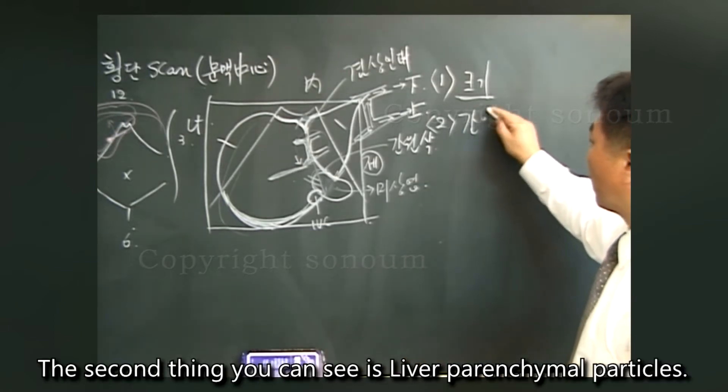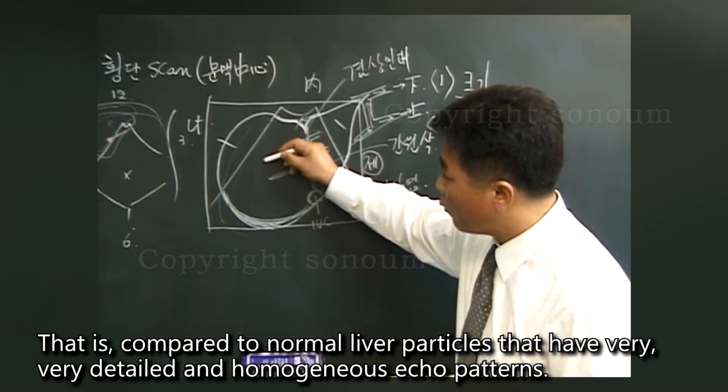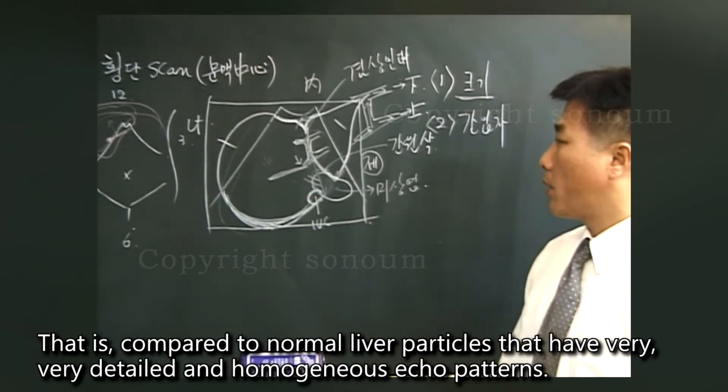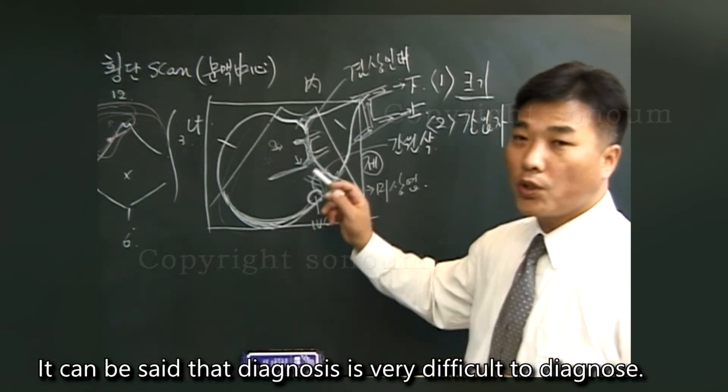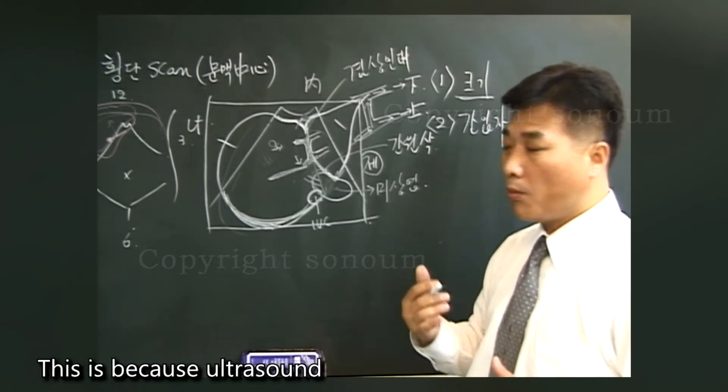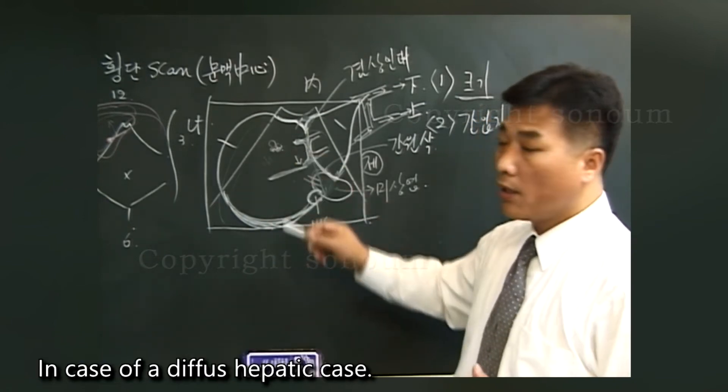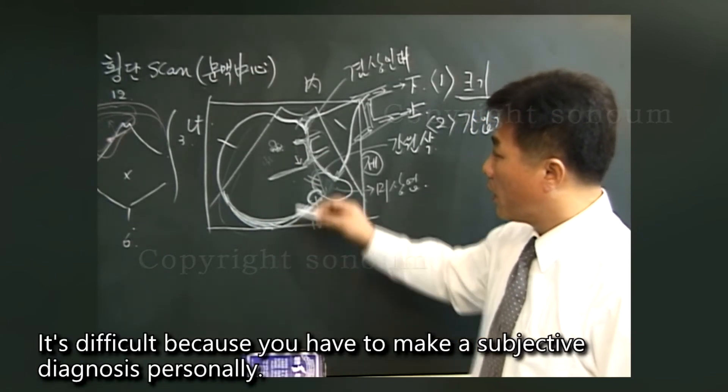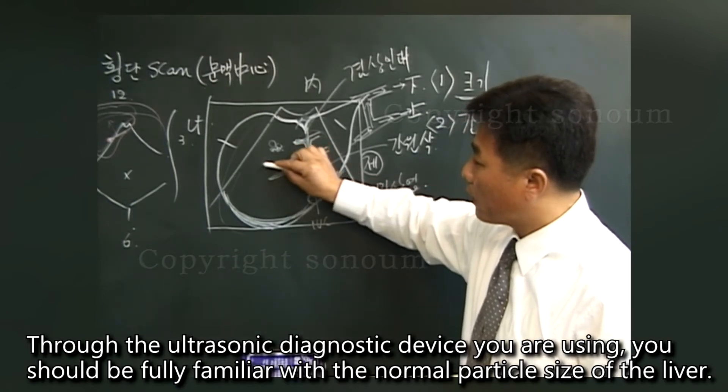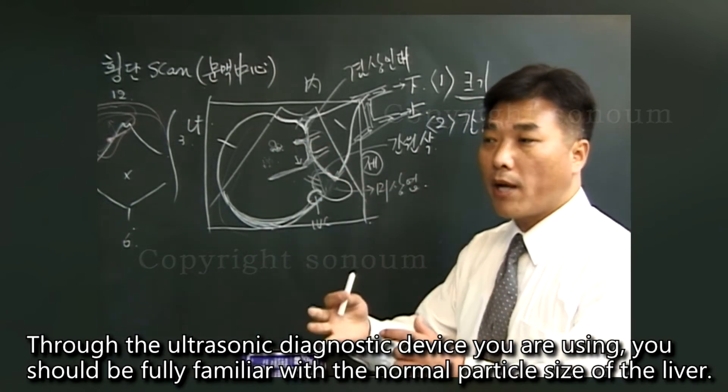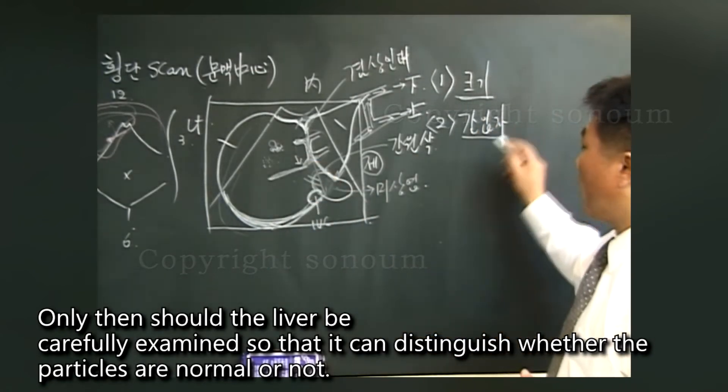The second thing you can see is liver parenchymal particles. That is, compared to normal liver particles that have very detailed and homogeneous echo patterns, when cirrhosis occurs, the particles of the liver look very rough and dirty. It can be said that diagnosis is very difficult. This is because ultrasound images are subjective diagnoses that can be seen by individuals. In case of a diffuse hepatic case, it's difficult because you have to make a subjective diagnosis personally. Through the ultrasonic diagnostic device you are using, you should be fully familiar with the normal particle size of the liver. Only then should the liver be carefully examined so that it can distinguish whether the particles are normal or not.